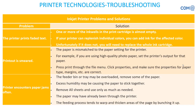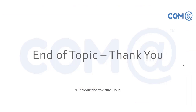Frequent paper jams in inkjet printers are caused by a paper pickup roller issue. The roller may be worn out, preventing paper from being fed properly. If one of two rollers is damaged while the other works fine, paper enters at an angle and jams. Both rollers should be replaced together to ensure paper is picked up evenly and simultaneously.